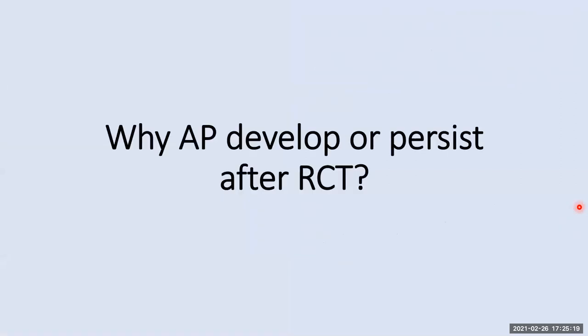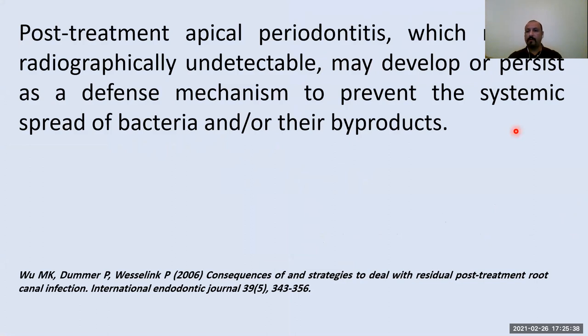Why does apical periodontitis develop or persist? It is quite common to see apical periodontitis in root canal treated teeth. Post-treatment apical periodontitis — which may be radiographically undetectable — may develop or persist as a defense mechanism to prevent the systemic spread of bacteria and their byproducts, as mentioned by my colleagues Dr. Hussain and Dr. Anas yesterday. In order to prevent systemic spread of bacteria, there will be apical periodontitis.